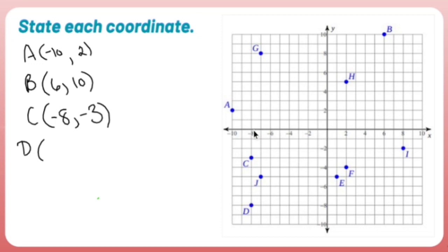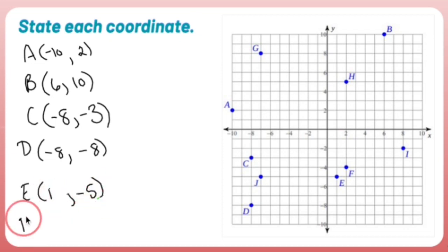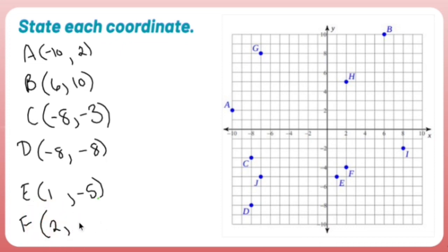E is right 1, down 5 — so E is positive 1, negative 5. F is right 2, down 4 — so F is positive 2, negative 4. G is left 7, up 8 — so G is negative 7, positive 8. H is right 2, up 5 — so H is positive 2, positive 5.